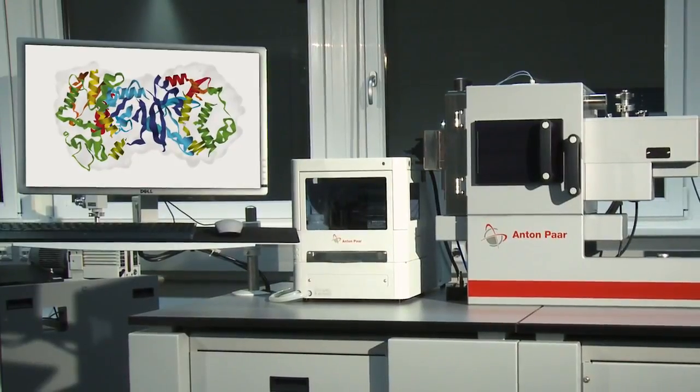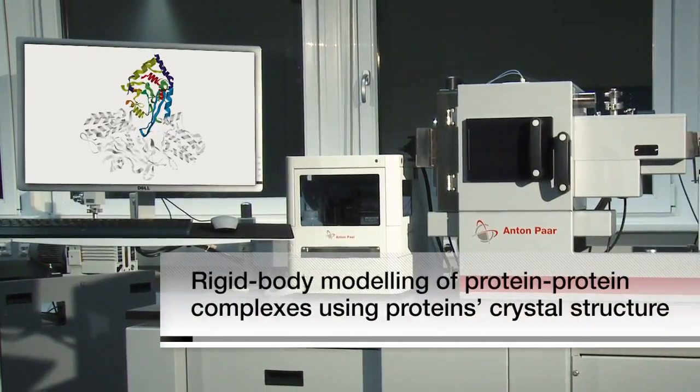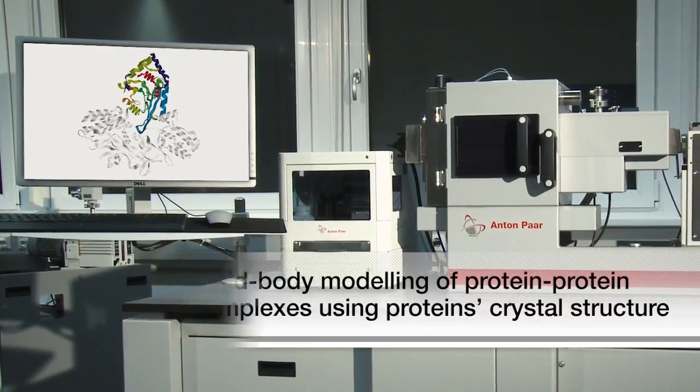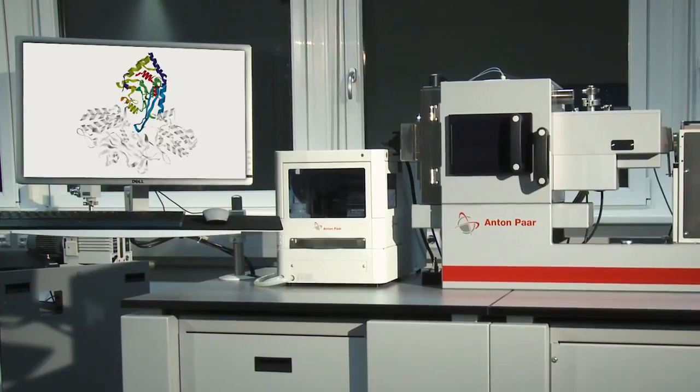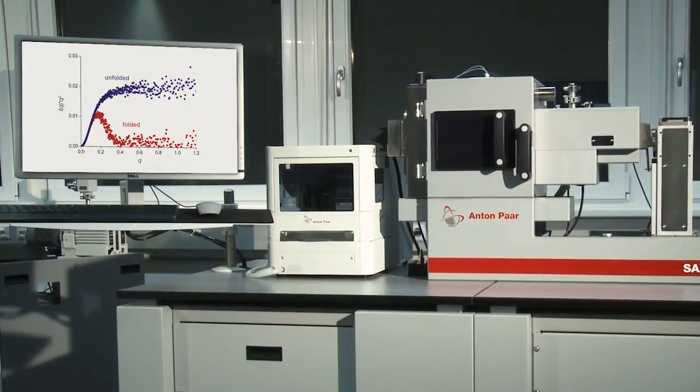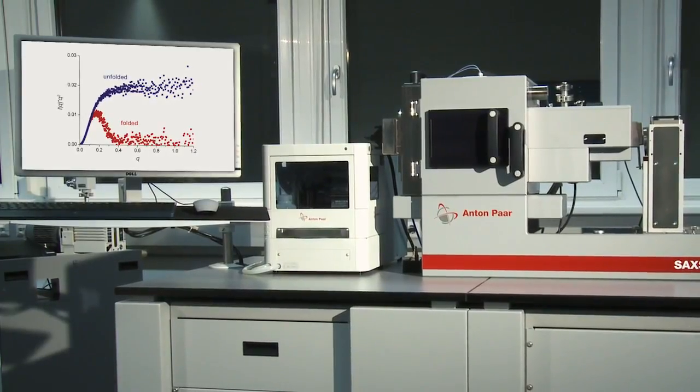SAXS data can also be combined with methods like crystallography to model the structure of larger ensembles like oligomers and protein complexes. The Kratky plot tells you whether your protein is folded or unfolded.